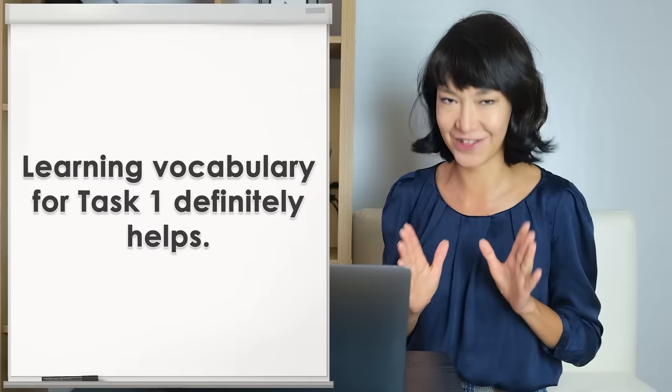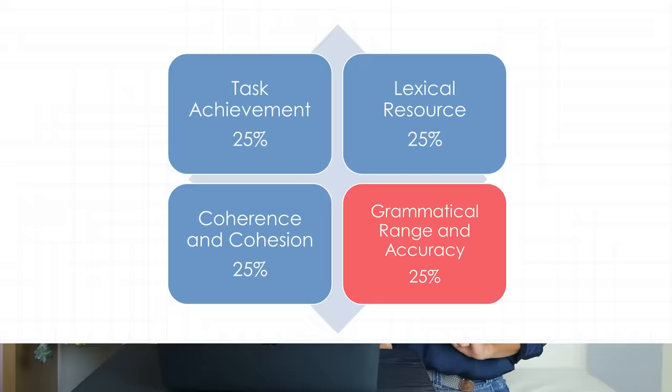Now let's change the topic and the type of task. Most of us think of grammar when we learn another language — we want to get it right. The examiner is looking at our range of structures, how complex they are, as well as noticing errors. If our sentences are pretty much error-free and complex, we are looking at band 8 or 9. A band 7 will include some minor errors but also show a good control of grammar and punctuation.